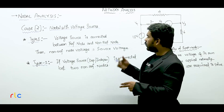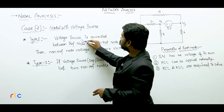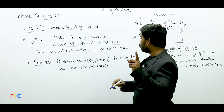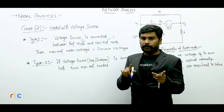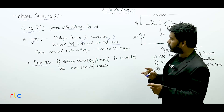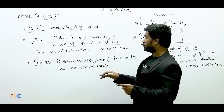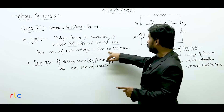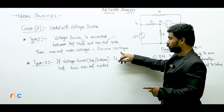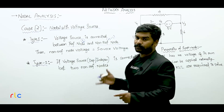How many reference nodes are in the circuit? Only one reference node. Non-reference nodes are n-1 non-reference nodes. We have to understand: the first node is connected to the source voltage. So if we have a voltage source, the non-reference node voltage will be equal to the source voltage, because the voltage source is connected to the non-reference node.